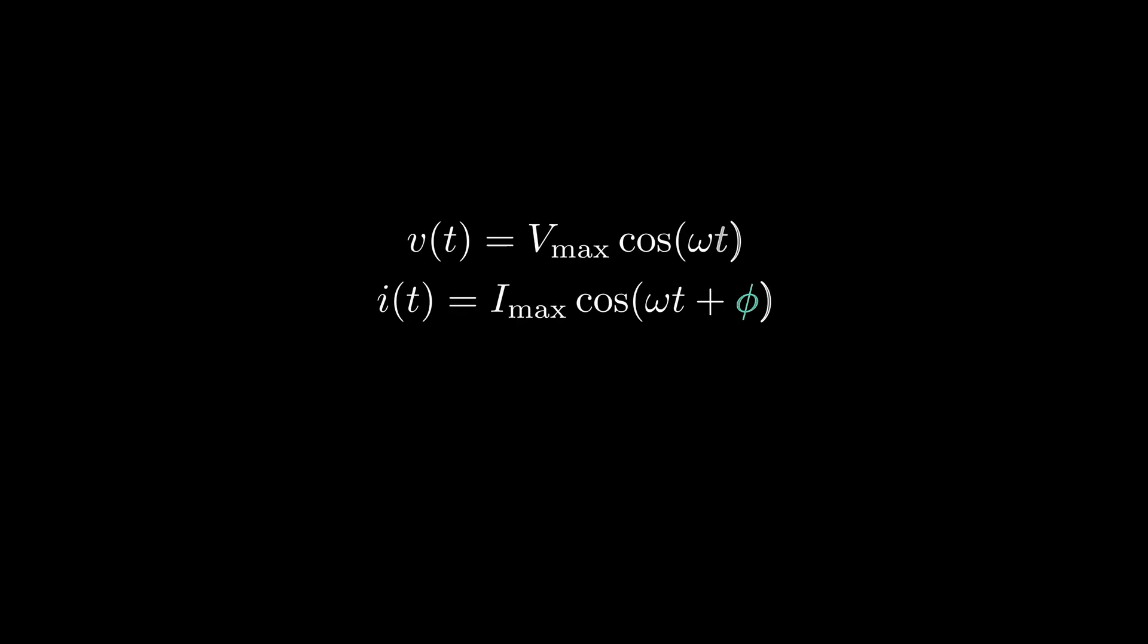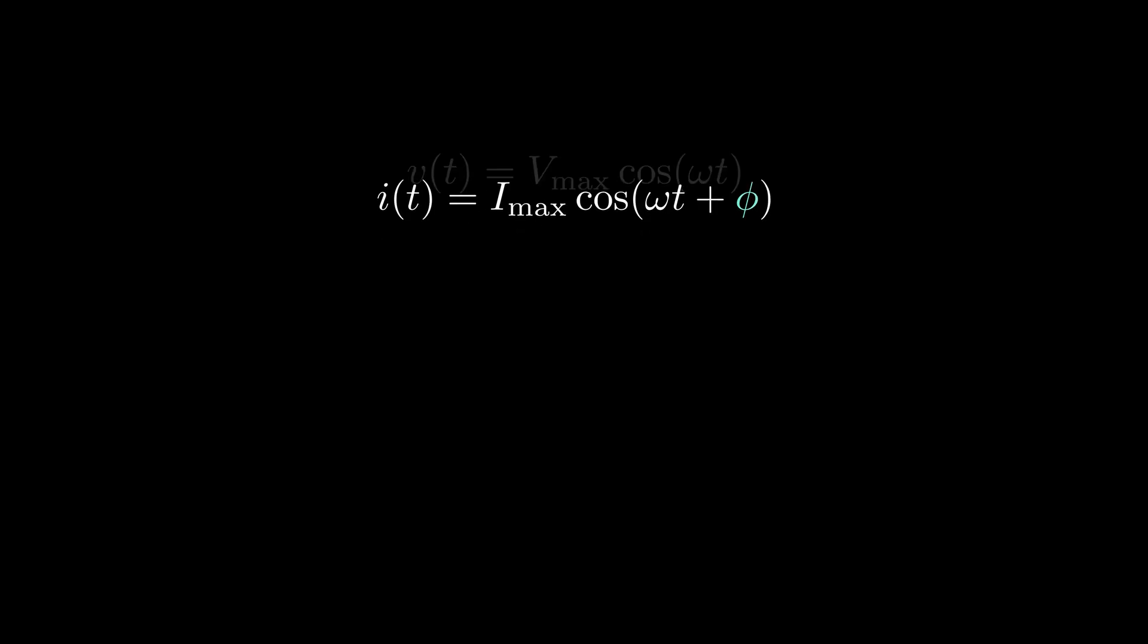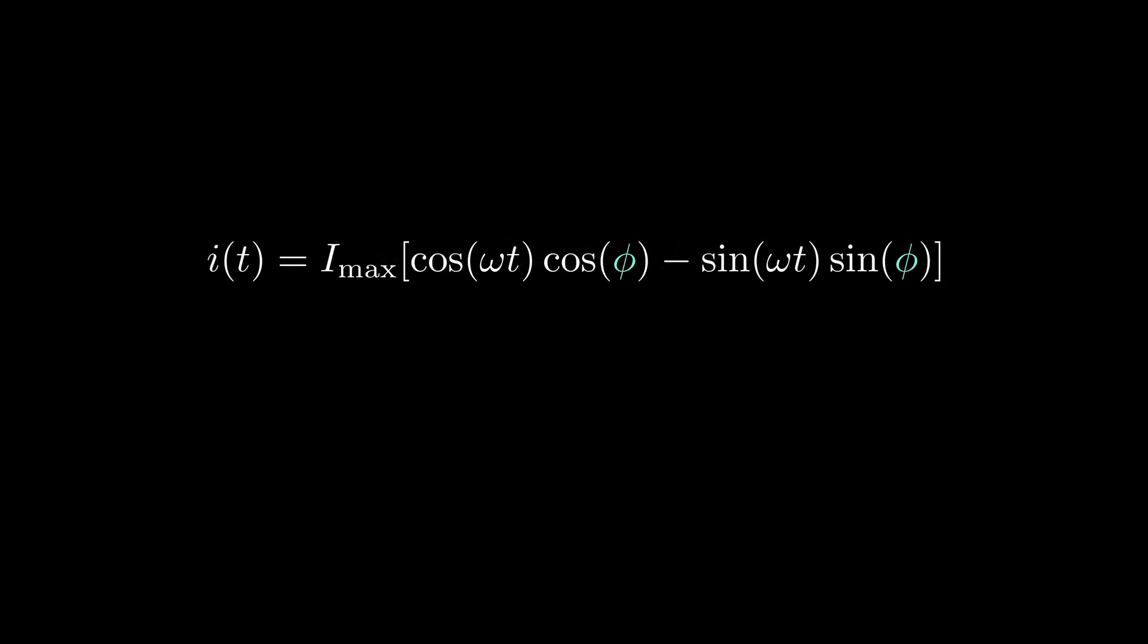We start with our voltage and current. Now let's focus on the current. Using trigonometrical formulas, we can expand cosine of omega t plus phi. The minus here can be written as i squared. Now look closely. This looks like two real parts and two imaginary parts multiplied together of this complex number and this one.